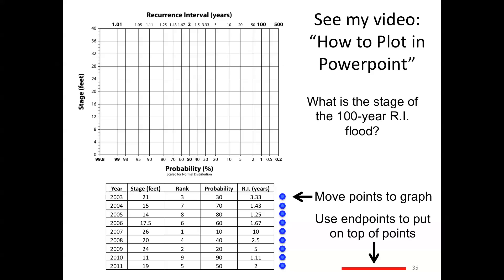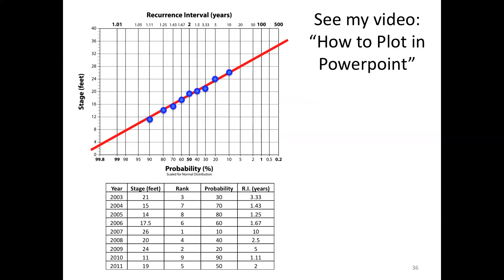But when you do that, and in this case, again, we're after the 100-year recurrence interval flood, our data would end up looking something like this. And so how are we going to use that to calculate the size of the 100-year flood? Well, the 100-year flood has a probability of 1%.